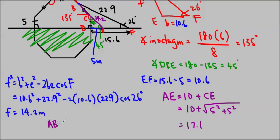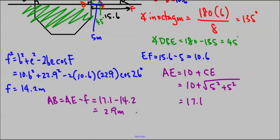Now we have AE and we have F, so we can find AB. AB will be AE minus little f, which is 17.1 minus 14.2, which gives us 2.9 meters. The ramp is 2.9 meters from the roof. And we're done.